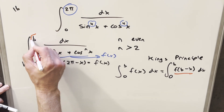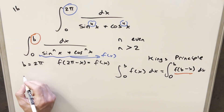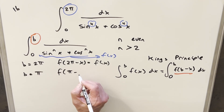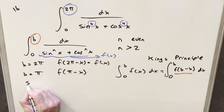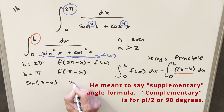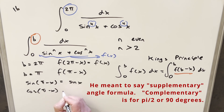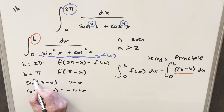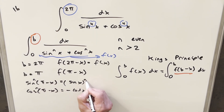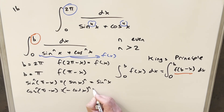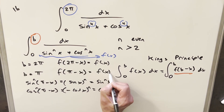Next we do something similar with b = π. We want to find f(π − x). For sin(π − x), the complementary angle formula gives sin(x). For cos(π − x), the complementary angle formula gives −cos(x). But again, when we raise to the nth power with n even, the minus sign is wiped out. This becomes sin^n(x) + cos^n(x), so f(π − x) = f(x) as well.